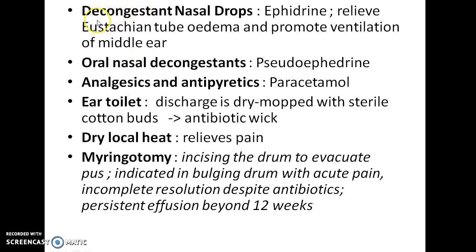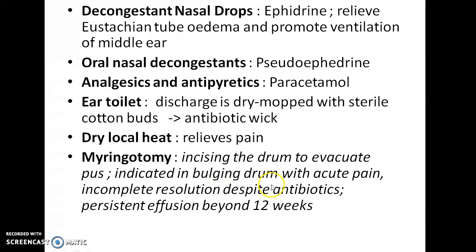Other modes of treatment include decongestant nasal drops like ephedrine, which relieve eustachian tube edema and promote ventilation of the middle ear. Oral nasal decongestants like pseudoephedrine can be prescribed. Analgesics like paracetamol can be prescribed for pain. Ear toilet — the ear discharge is dry mopped with sterile cotton buds and then an antibiotic wick is placed. Dry local heat can be given to relieve pain. Myringotomy, i.e., incising the drum to evacuate pus, is indicated in bulging drum with acute pain, incomplete resolution despite antibiotics, and persistent effusion beyond 12 weeks.